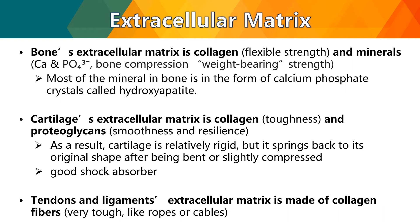Most of the minerals in bone are in the form of calcium phosphate crystals called hydroxyapatite. In the cartilage's extracellular matrix, you will see collagen for toughness and proteoglycans for smoothness and resilience. As a result, cartilage is relatively rigid but springs back to its original shape after being bent or slightly compressed — it is also a good shock absorber. For tendons and ligaments, their ECM is made of collagen fibers, which are very tough, like ropes or cables.